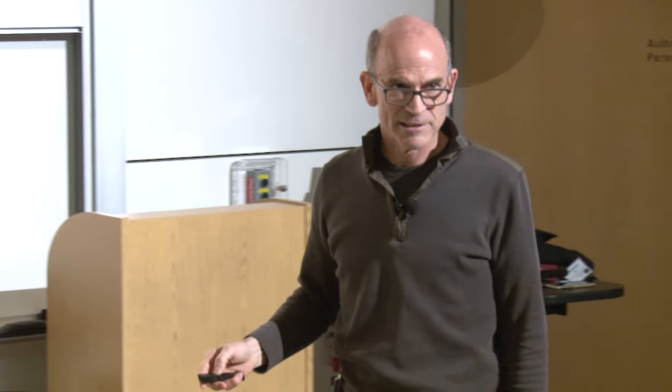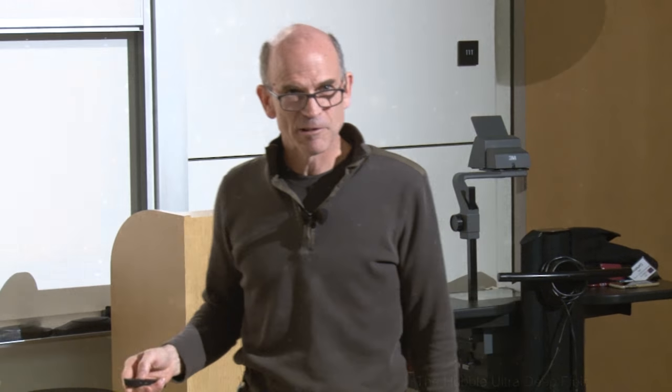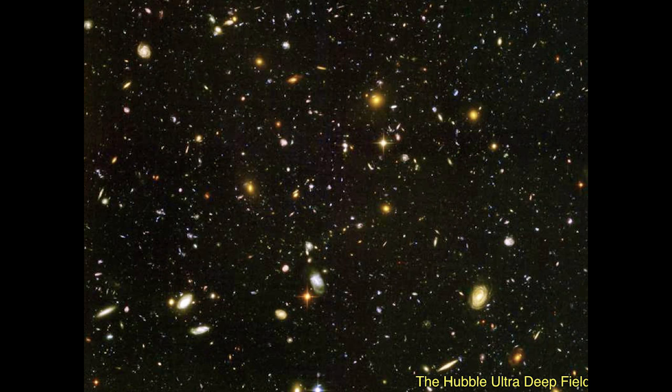Here is the deepest ever image of the universe in optical light from the Hubble Space Telescope — a tiny part of sky smaller than the tip of your pinky held at arm's length. Everything you see in this image, every little blip of light, is a galaxy, not a star. This is looking through our own galaxy to avoid contamination from starlight.